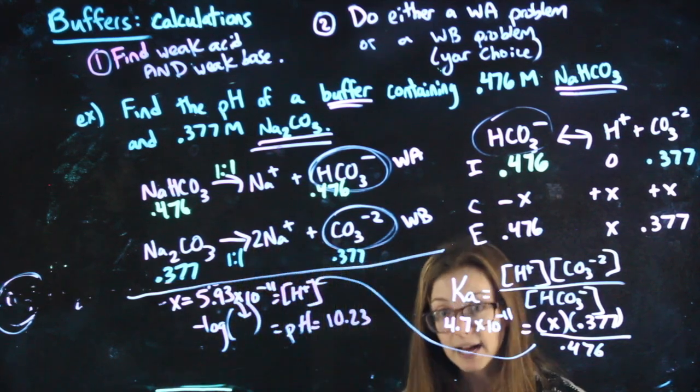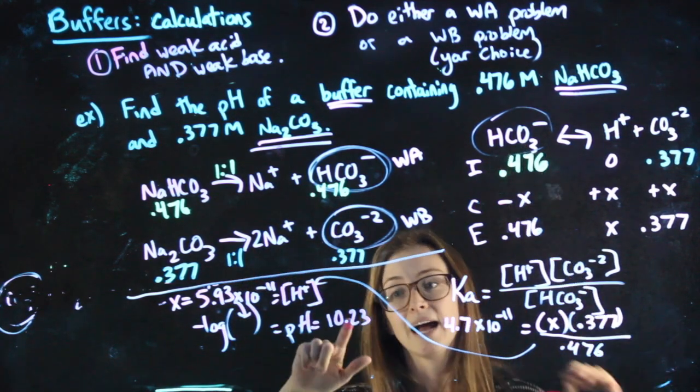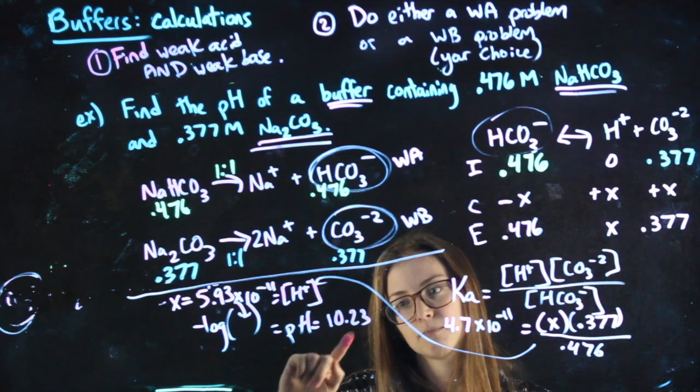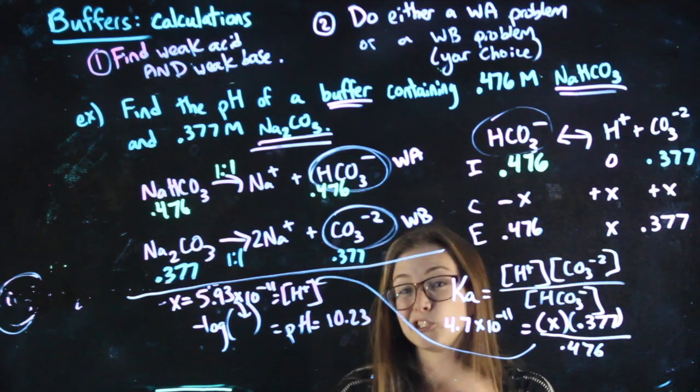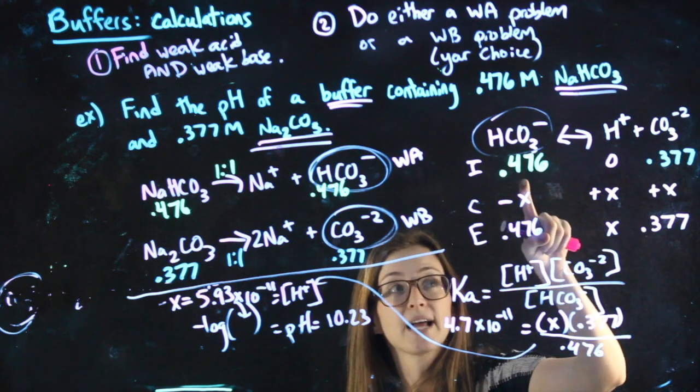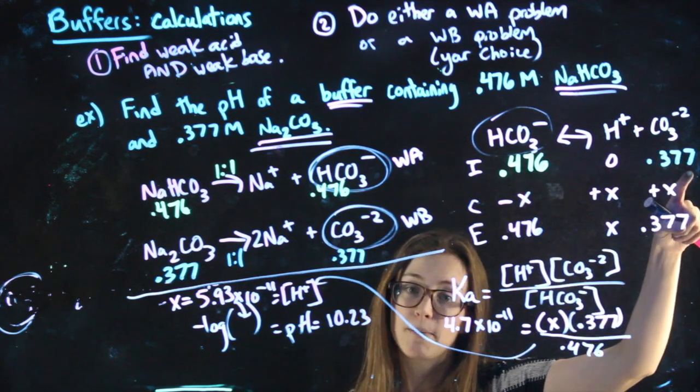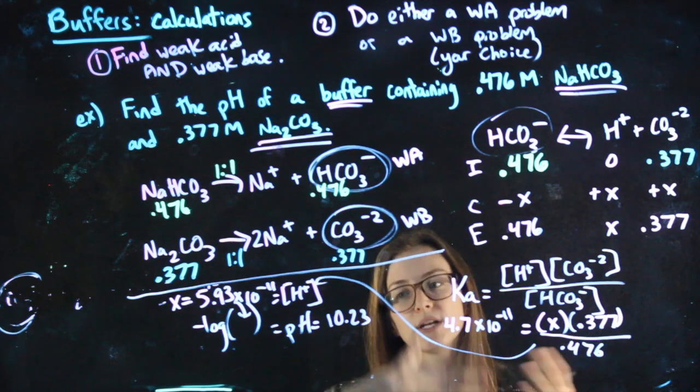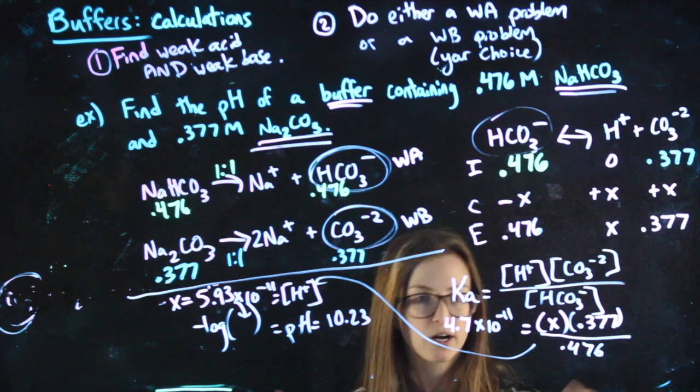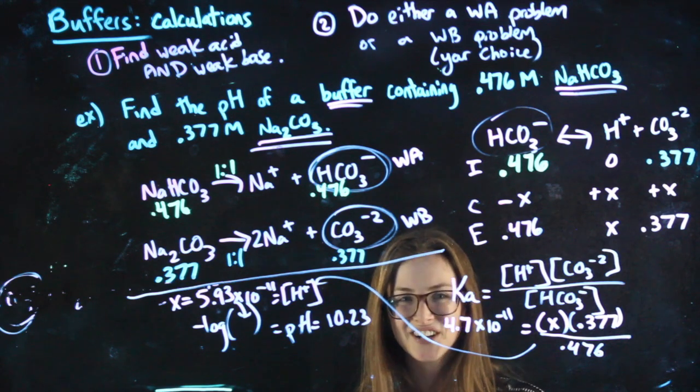This is the only time, but with buffers, when you can do a weak acid problem and potentially end up with the right answer being a basic pH. The reason for that is we didn't just have the weak acid, we had a weak acid and we had its weak base. And we didn't know what ratio those needed to be in. So we didn't know ultimately what we were going to have extra of. Okay, try those.